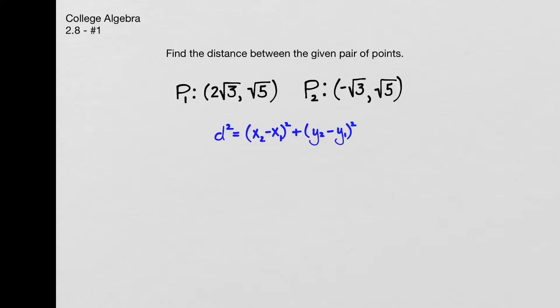So d squared is then, for this particular problem, I'll take my first x value, 2 times the square root of 3, minus the second x value, which is negative square root of 3.